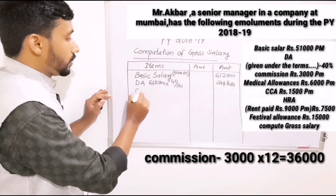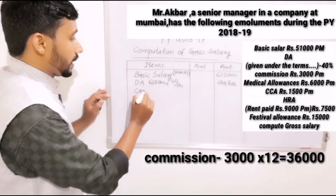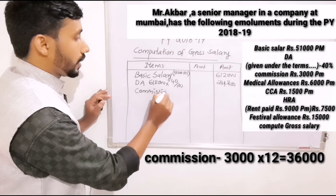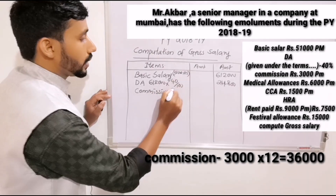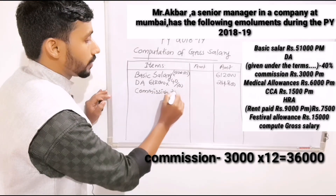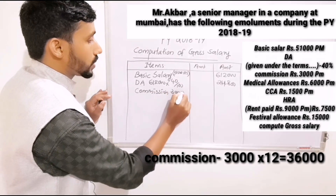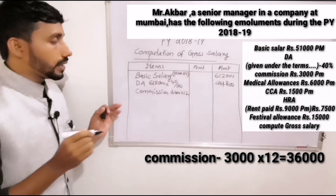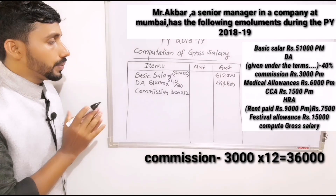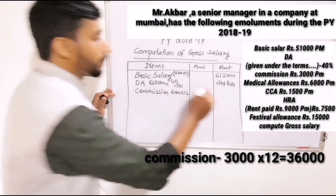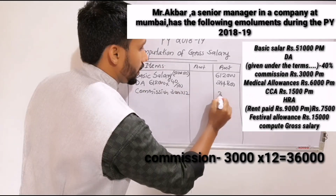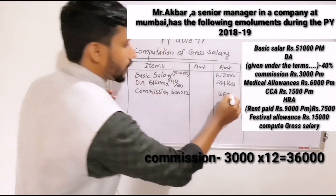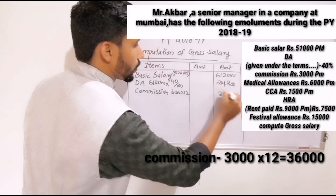The third item is commission. Commission is $3,000 per month, so $3,000 into 12 equals $36,000.